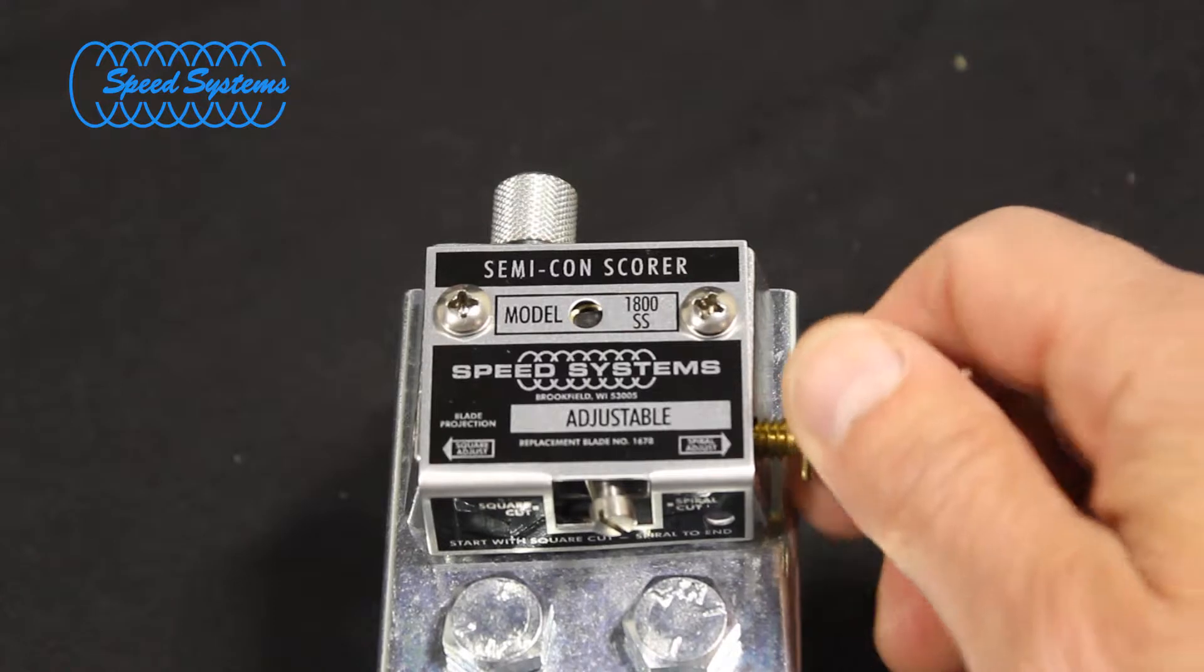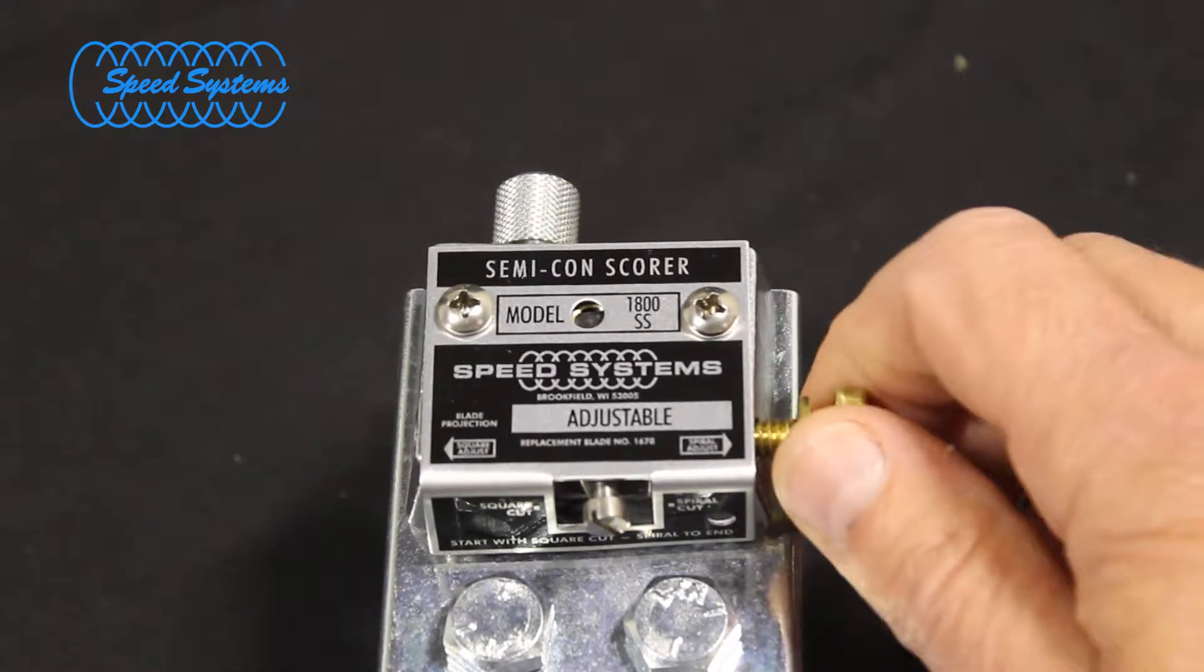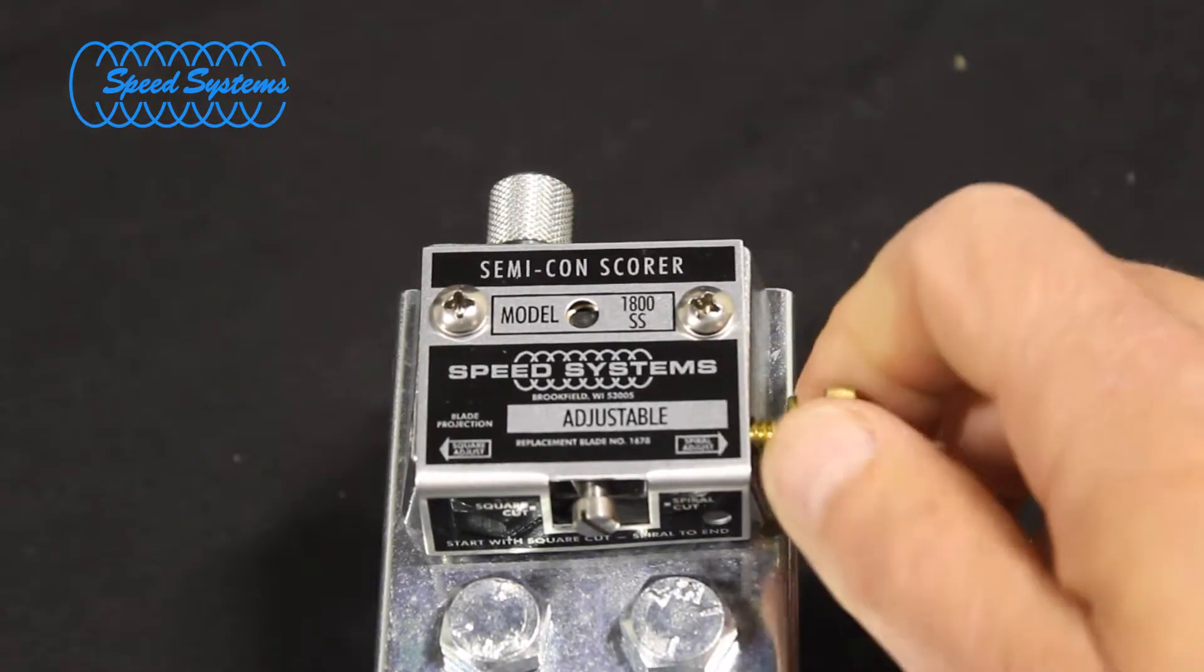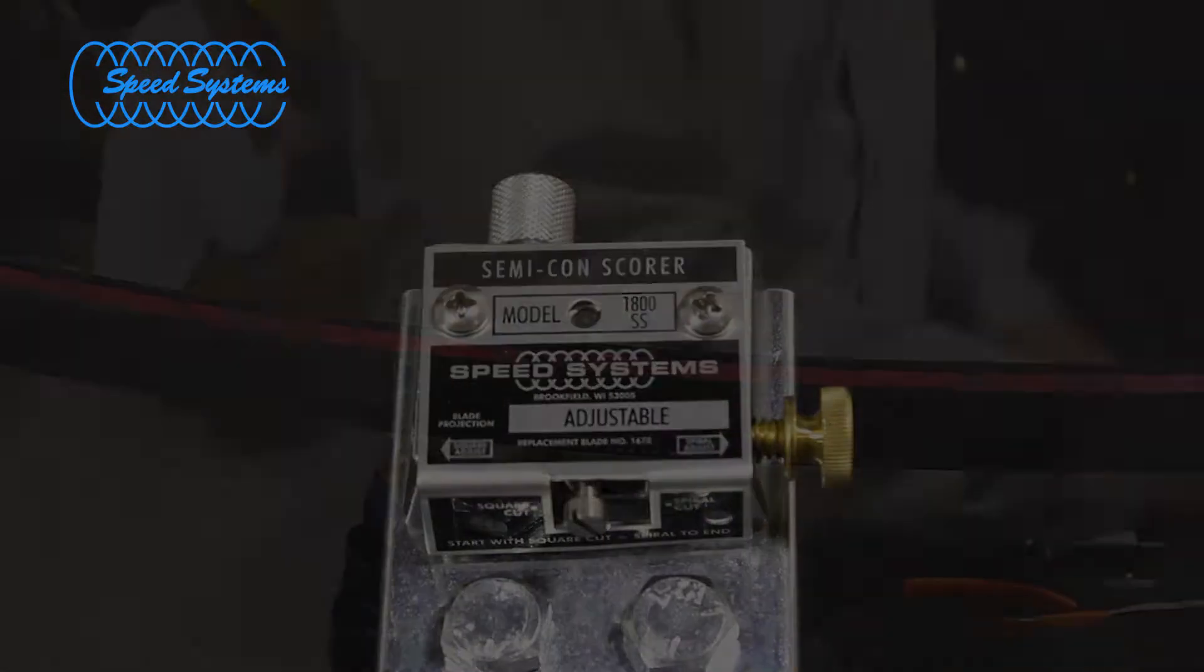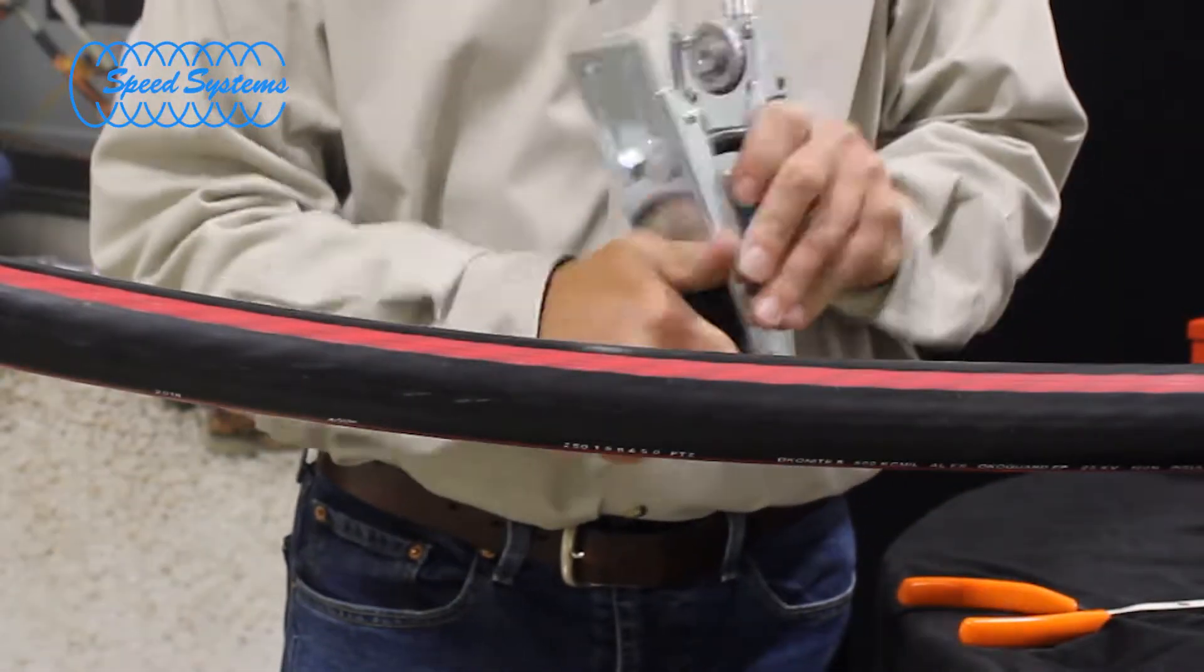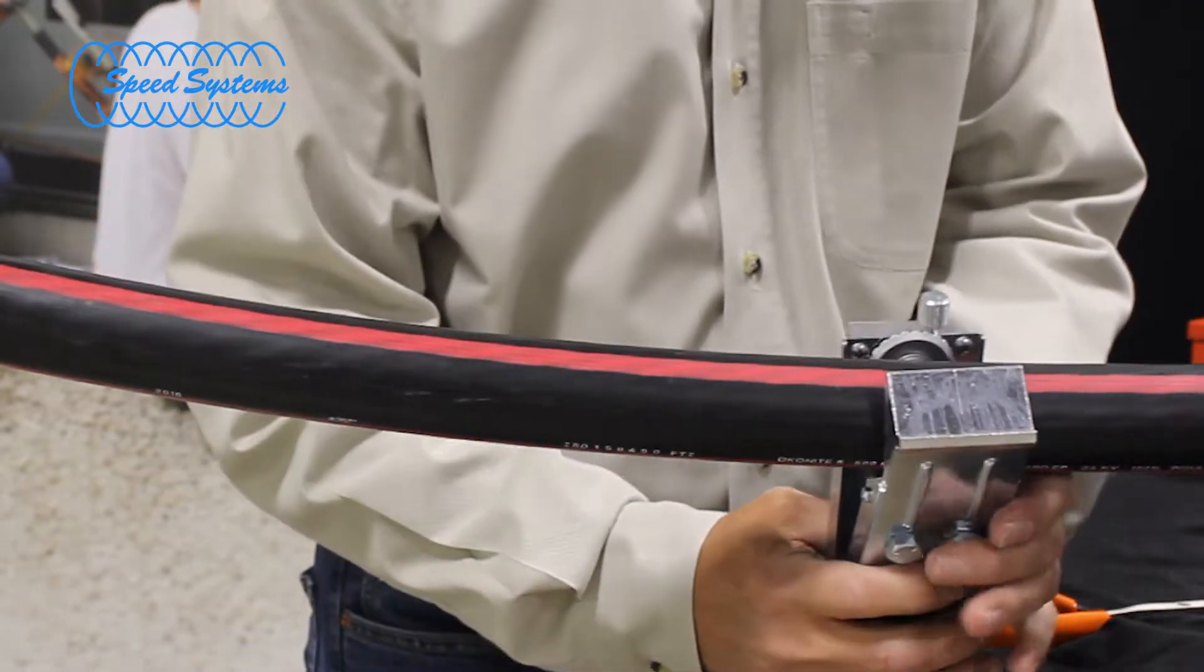Use the 1800SS to make a square cut in the outer jacket at the mark. Make sure the blade is in the square cut position. Open the jaws by turning the knob counter-clockwise until the tool can be positioned on the cable.